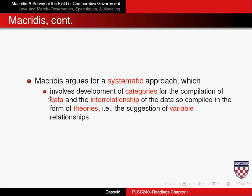Once we agree that a systematic approach is the way to go, the first step is to collect data. When we collect data, what we're looking to do is at least implicitly understand that political phenomena fall into different categories. The way that we choose to categorize and conceptualize our data has a lot to do with what we think the world looks like, and what we think the world looks like has a lot to do with what our theories of the world tell us. So collecting data really means that you're implicitly looking to categorize these data.